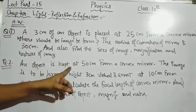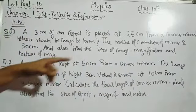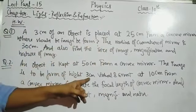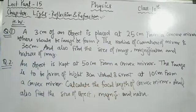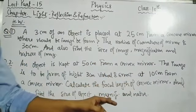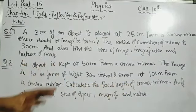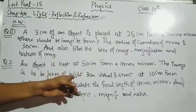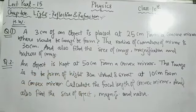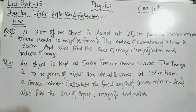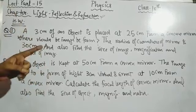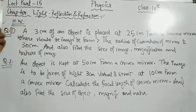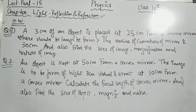Second homework question: an object is kept at 50 cm from a convex mirror. The image is formed at a height of 3 cm, virtual and erect, at 10 cm from the convex mirror. Calculate the focal length of the convex mirror and also find the size of the object, magnification, and nature. Note that in this question the size of the object is to be found, while the size of the image (3 cm) is given. To solve any question, first identify what is given and what is asked, note the sign convention and which mirror it is, then solve. Thank you.